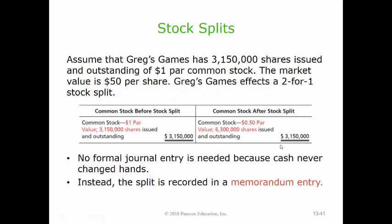Let's do an example of a stock split, this time for Craig's Games. They have 3,150,000 shares issued and outstanding of their $1 par common stock. The market value of their stock is $50 per share at the time of the split, and the split they are affecting is a two-for-one split. So what this is going to do in a two-for-one split is put twice as many shares out into the market, but make each share's par value be worth only half as much.